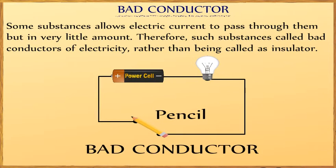Some substances allow electric current to pass through them but in a very little amount. Therefore, such substances are called bad conductors of electricity rather than being called insulators. In fact, most substances allow electric current to pass through them under certain conditions. So, instead of using the terms conductors and insulator, good conductors and bad conductors are used.